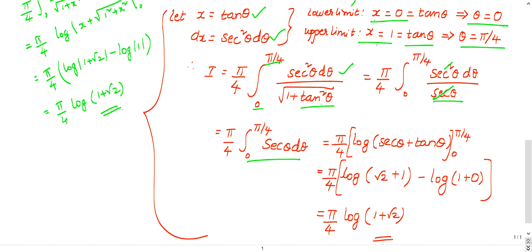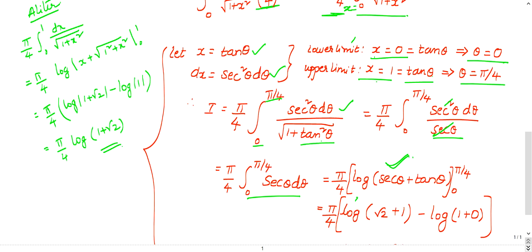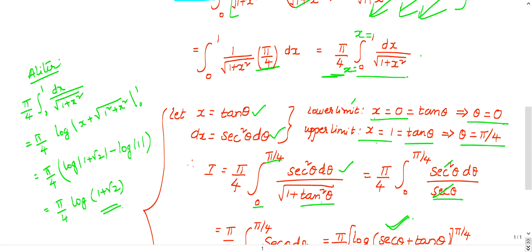What is the integration of secant theta? Log of secant theta plus tan theta. This is a standard result, you should remember this. Log of secant theta plus tan theta and substitute the limits. If you substitute and if you simplify it directly, you will get this as the answer. I need not explain the calculation part. So some people will feel this is very difficult. Even I felt very difficult. There is an alternate method.